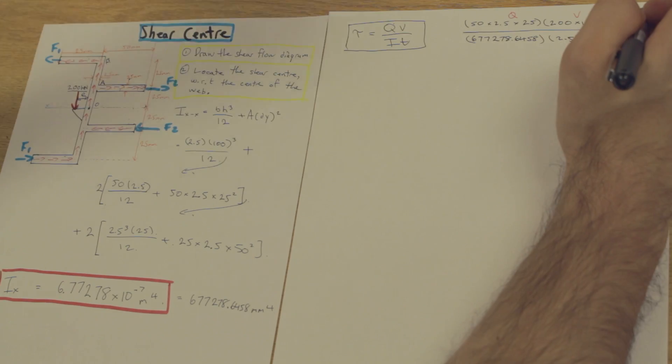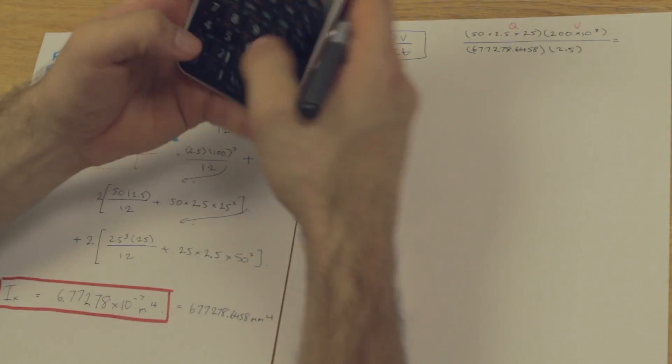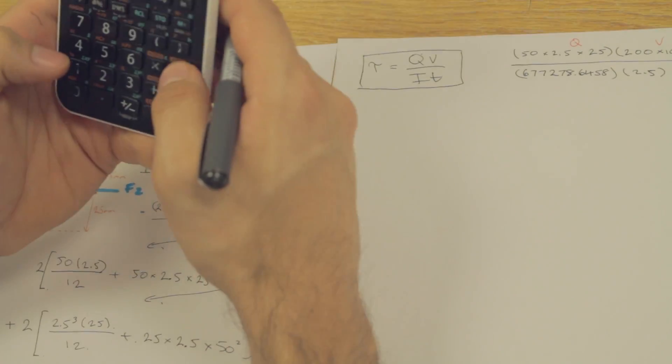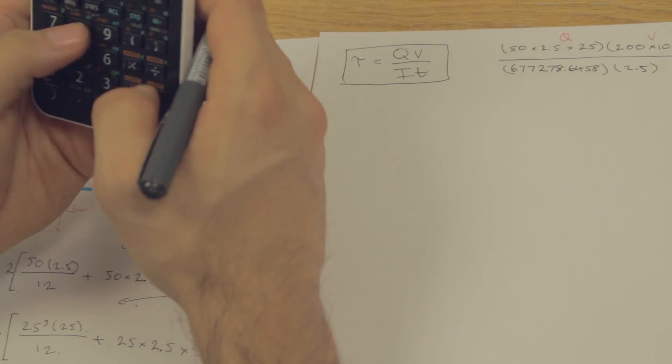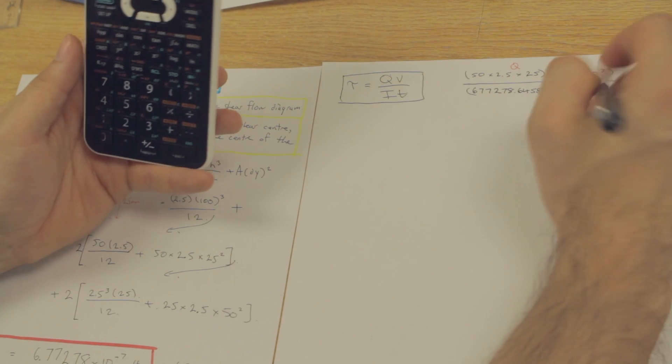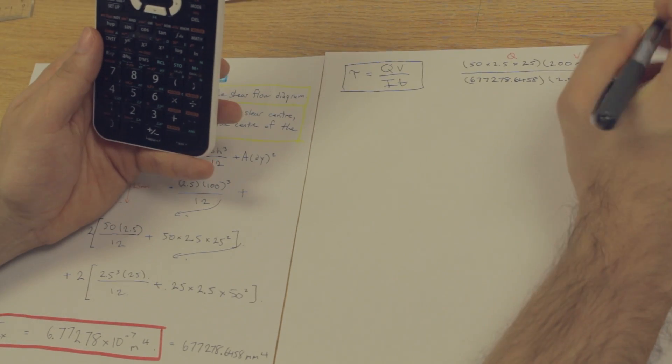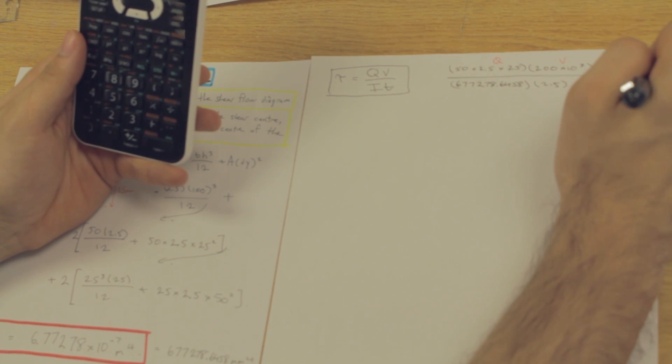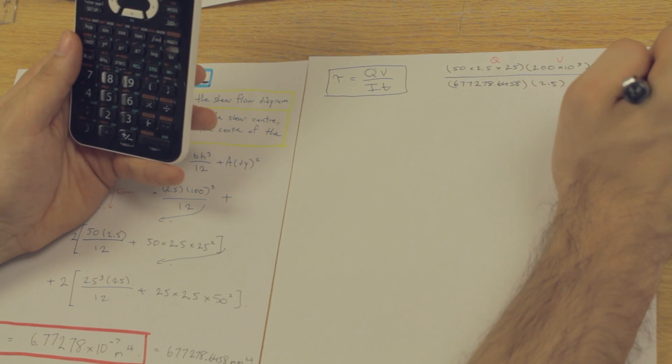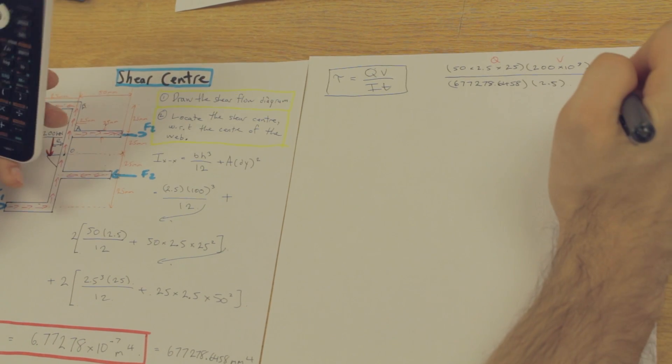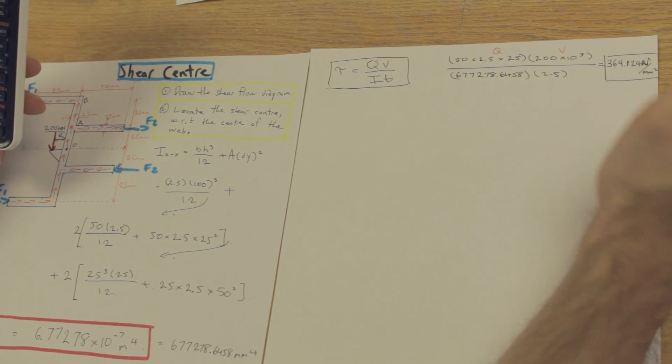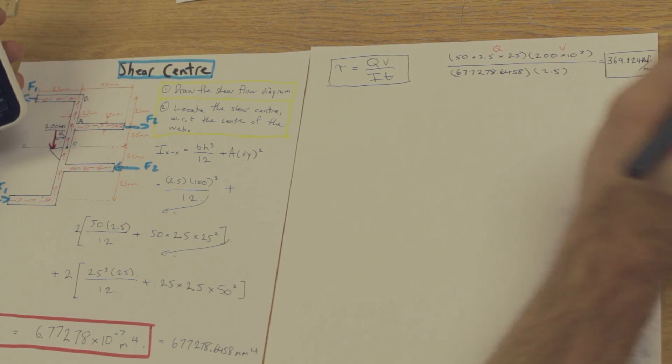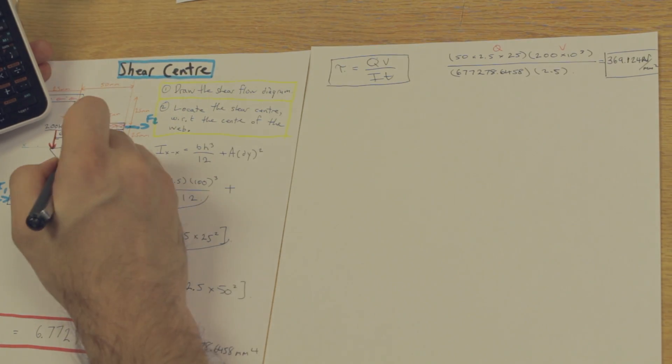Now, if we go ahead and calculate that, let's just put it in our calculator real quick. We end up with a value of 369.124 newtons over millimeters squared. Which is MPa, right? Perfect. So, we are done solving tau for this section here.